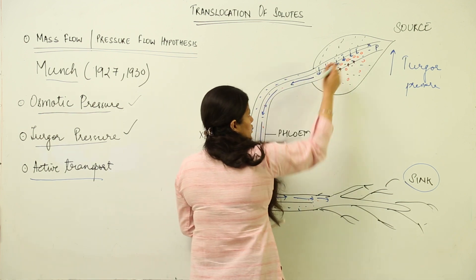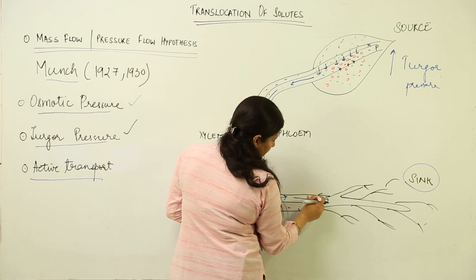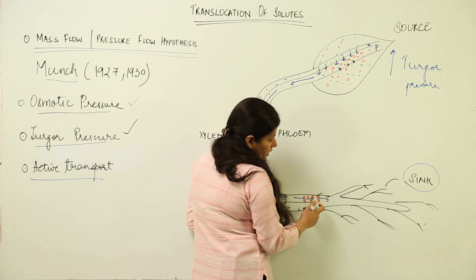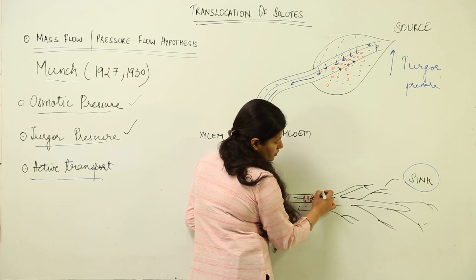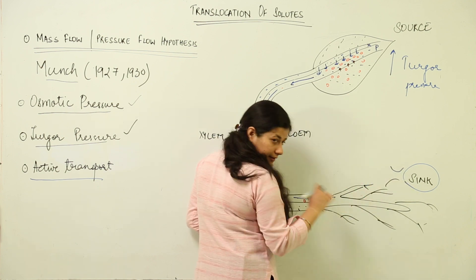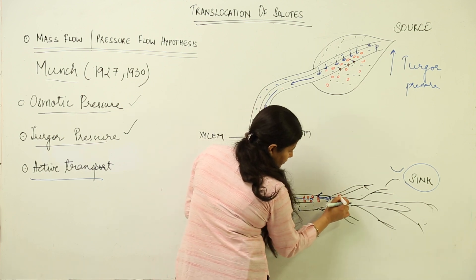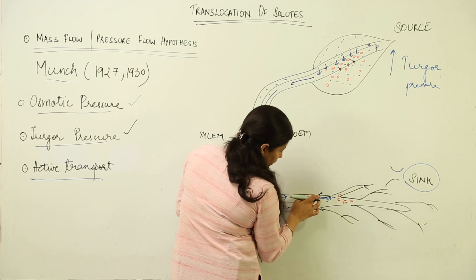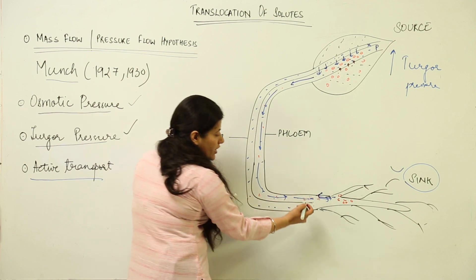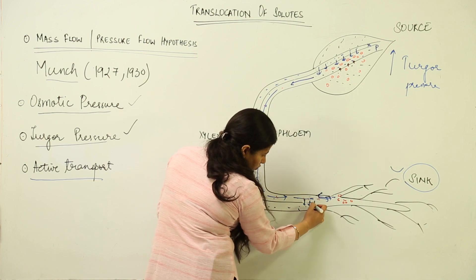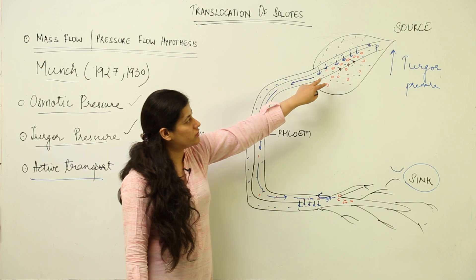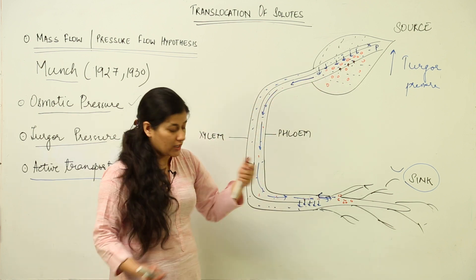At the sink, because of the mass flow, the solute particles also arrive. When the solutes reach the site of the sink, there is again active transport utilizing ATP — the solute particles actively enter into the sink cells. Because they have entered the sink actively, the osmotic concentration in the phloem at that site reduces, and the water molecules move back outwards into the xylem. Hence the solute particles are transported from source to sink.